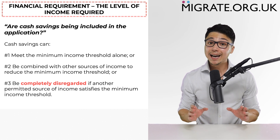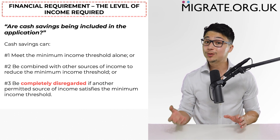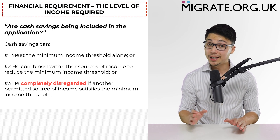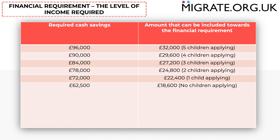We will provide a step-by-step account of how to calculate cash savings later in this video, but it is worth noting here that £18,600 in cash savings will not meet the minimum income threshold alone. This table shows the required amount of cash savings based on whether dependent children are applying. You can see that £62,500 is required to satisfy the threshold alone where no dependent children are applying, and higher if dependent children are applying. This is because the Home Office caseworker follows a formula to calculate a gross annual income equivalent figure.